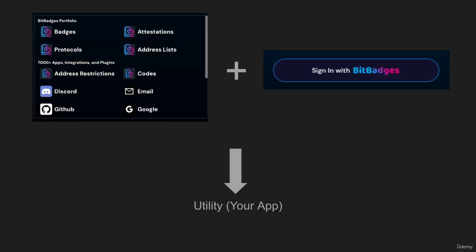Going back to the utility diagram, it makes a little more sense now. We have the four things in your portfolio — badges, verticals, attestations, and lists — and you can think of these as criteria checking as a service. From your app, you can call on BitBadges to check criteria: who owns what badge, who's on each list, whether they have a certain credential or attestation, and then hook in with all the other features and focus on the core utility of your app.